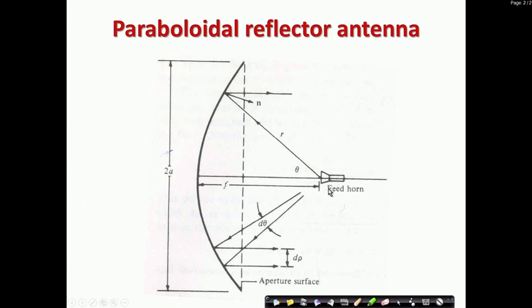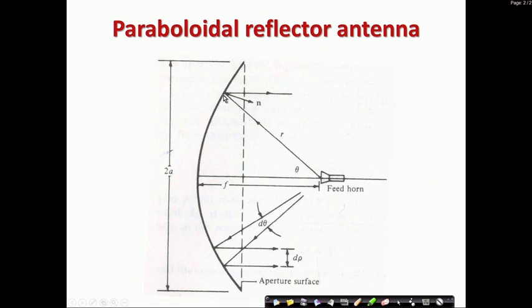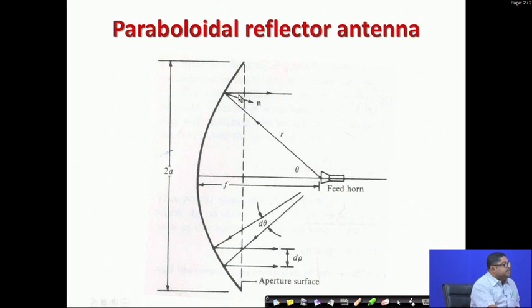This dashed line is called the aperture plane. If you think of a dish antenna, if you take a plane from one edge to the other, for the paraboloid that plane will be a circular disk — called the aperture surface. Rays going from the feed, after getting reflected from the paraboloid, become parallel to the axis.